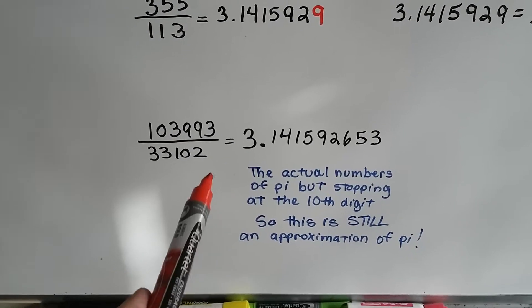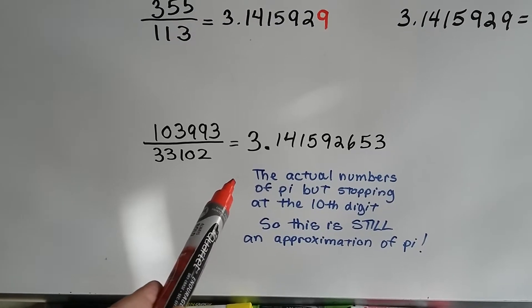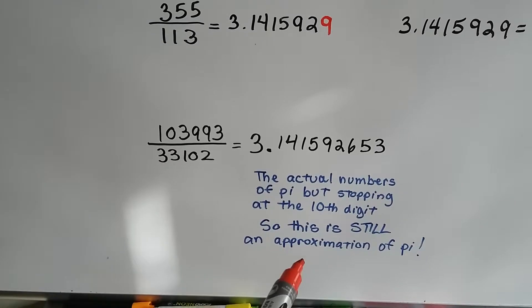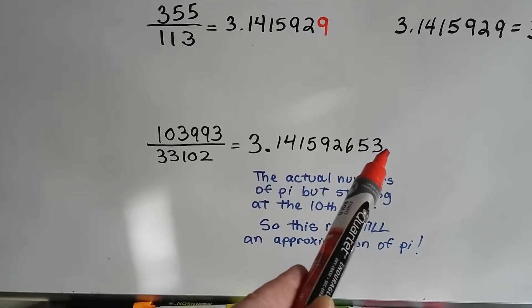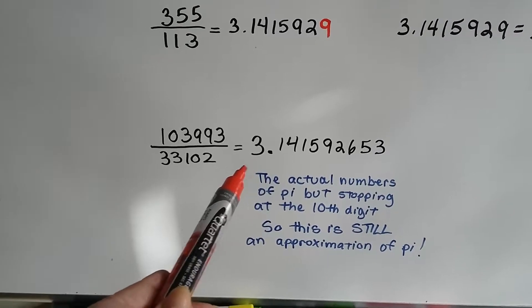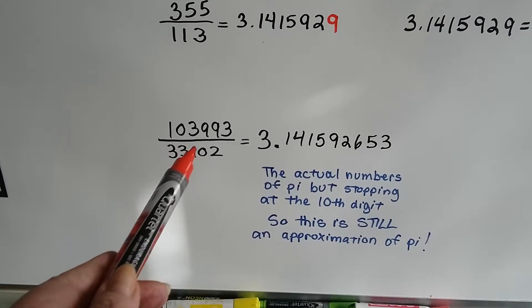We can also take the actual first 10 digits of pi and write it as a fraction. But, this is still an approximation because pi doesn't stop here. It continues on. So, using the first 10 digits, we can do it.